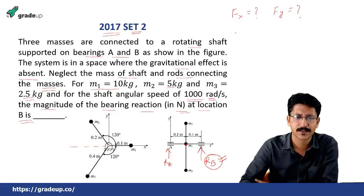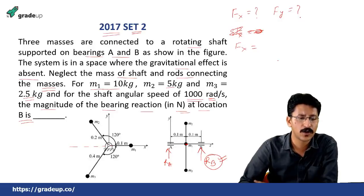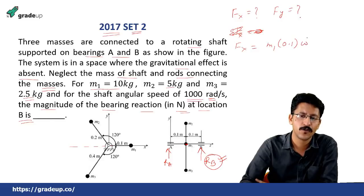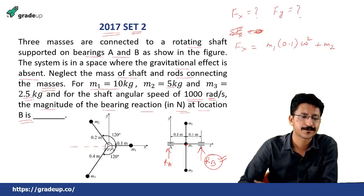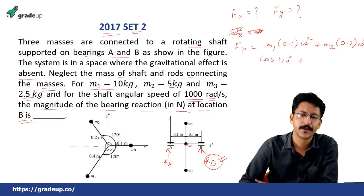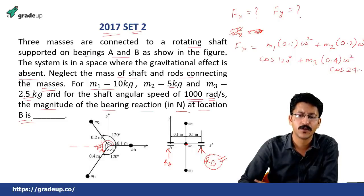So for finding the Fx, what you need to find? You need to find the Fx. Fx equal to m1 0.1 omega square, because this is in this direction only, plus m2 0.2 omega square cos 120 degree plus m3 0.4 omega square cos. This angle will be how much? 240, because this is 220 from here. So this will be 240. It is advisable to take it only in the one direction and just add up. So this will be 240.